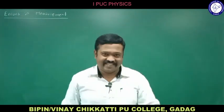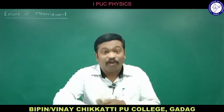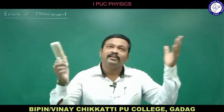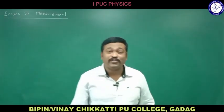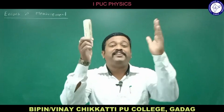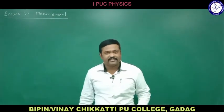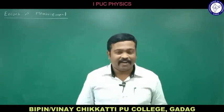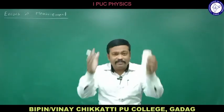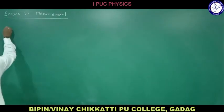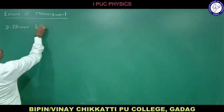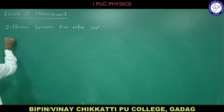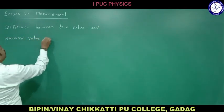Whenever we measure a physical quantity, there will be errors. For instance, the time in your clock may differ from your dad's clock, your mother's clock, and the wall clock. Whenever we measure a physical quantity, errors exist. We will understand what these errors are and how to eliminate them.